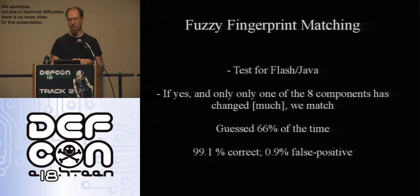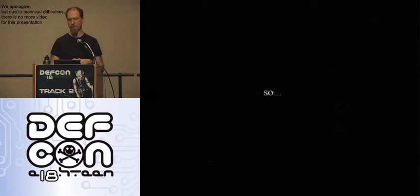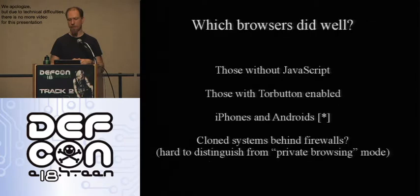So even though fingerprints change quite fast — even though the half-life is five days — you're still trackable once your fingerprint has changed. There were really only four categories of browsers that survived this. If you block JavaScript, perhaps with NoScript, you're in pretty good shape. If you use Tor button, which zaps the plugin list and anticipates many of these attacks, you're in pretty good shape — you don't even have to use Tor, just the Tor button Firefox extension.